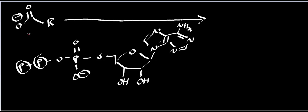I have a lone pair on this oxygen — I'll do it in red. This lone pair is going to do a nucleophilic attack, specifically on this phosphorus, and what's going to happen is this pi bond is going to kick up. One thing I want to be clear about: in the last video we looked at serine hydrolase.